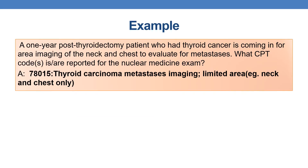Let us discuss an example. A one-year post-thyroidectomy patient who had thyroid cancer is coming in for area imaging of the neck and chest to evaluate for metastasis. Areas are neck and chest only. What CPT code is to be reported for nuclear medicine exam? The answer is 78015, because the patient is coming for thyroid carcinoma metastasis imaging and the area is limited — that is, only neck and chest.